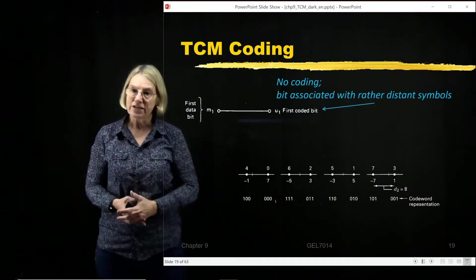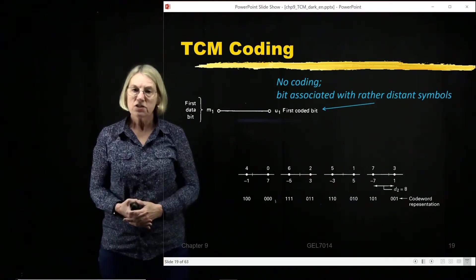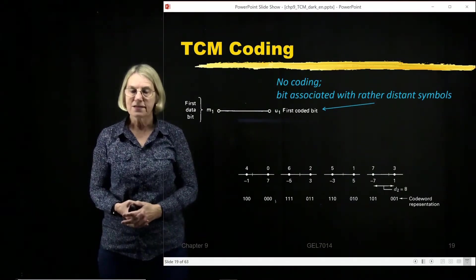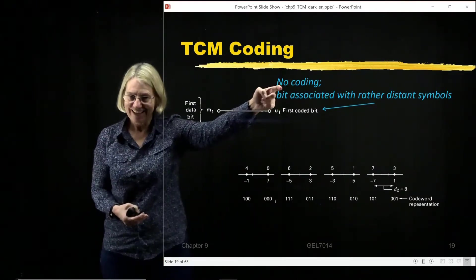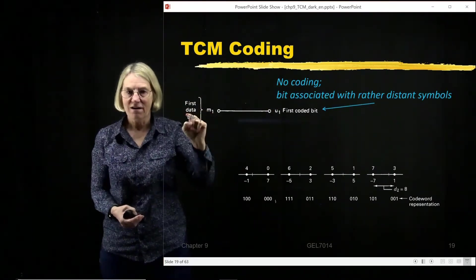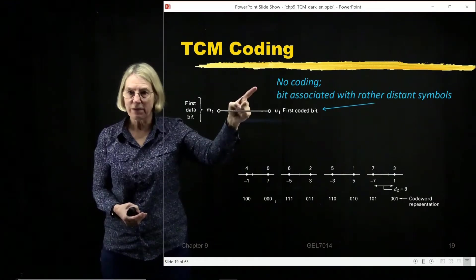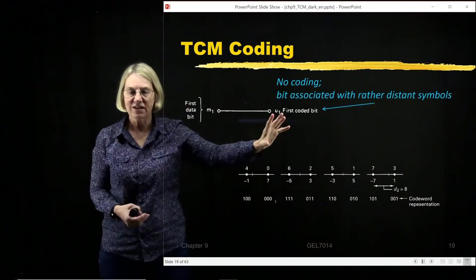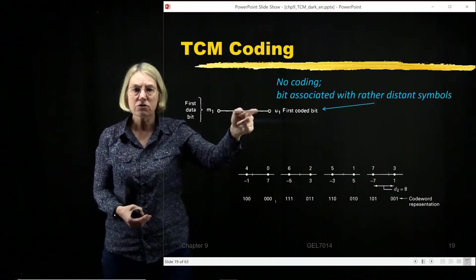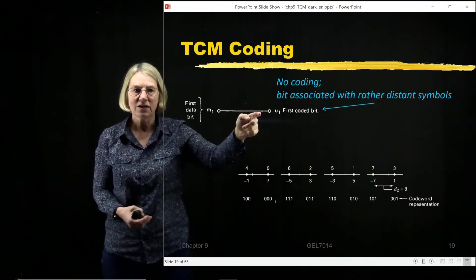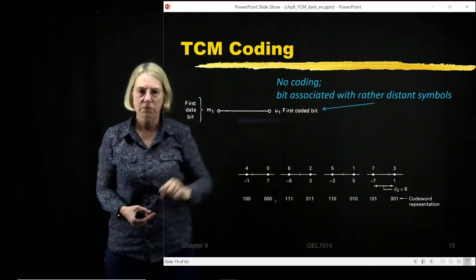So Trellis Coded Modulation starts with one data bit which is not coded. And this is where we're associating this bit, which will not get any protection, will not get any error correction going on it. We're going to associate this particular bit with the distant symbols.